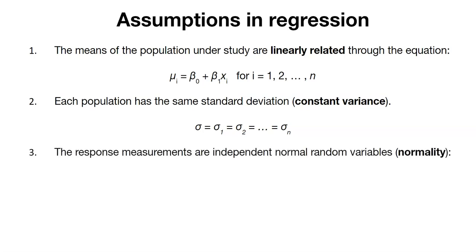The third assumption is that the response measurements are independent normal random variables. This is the assumption of normality. And so we can write normality, or again, write how it's distributed normally.